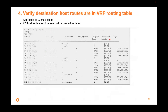For Layer 3 multi-fabric, you should always see host routes because you might have the same subnet spanning multiple fabrics — you need host routes to know where to forward traffic correctly. Make sure you see those host routes with the desired next hop. For example, if an IP is expected from Fabric 3, the next hop should be the Fabric 3 border VTEP. Similarly, if an IP is expected from Fabric 4, it should have the Fabric 4 border VTEP as the next hop.